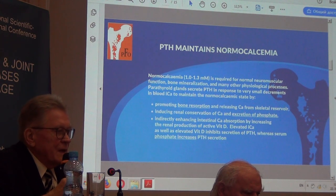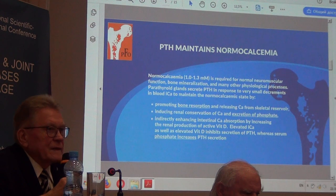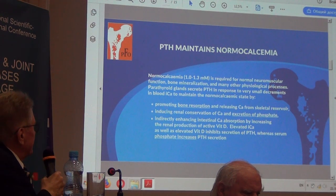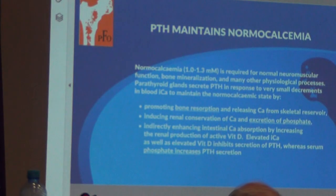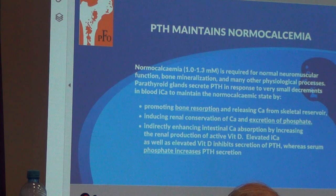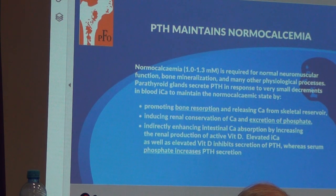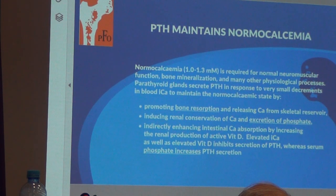Normal calcemia is required for normal neuromuscular function. The regulation of calcium level is possible by promoting bone resorption and releasing calcium from the skeletal reservoir, inducing renal excretion of phosphate, and indirectly enhancing intestinal calcium absorption by increasing renal production of active vitamin D. Elevated ionized calcium as well as elevated vitamin D inhibits secretion of parathyroid hormone, whereas elevated serum phosphate increases parathyroid secretion.